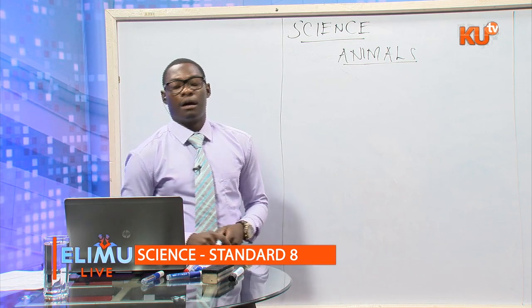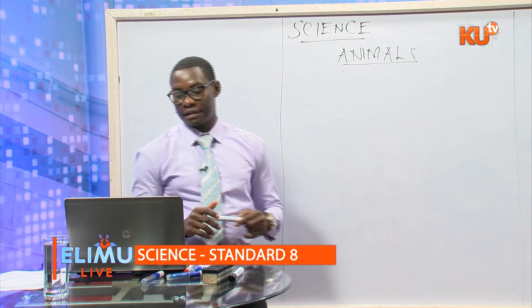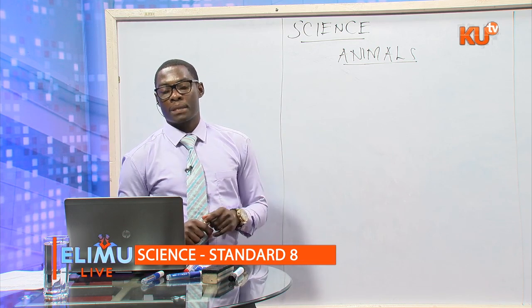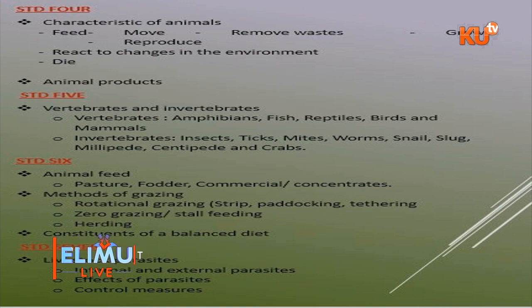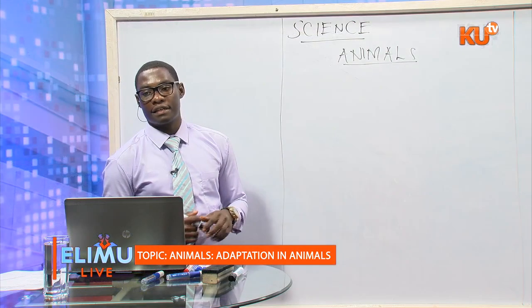In class 4, you learn about the characteristics of animals. All animals feed, move, reproduce, remove wastes, grow, and react to changes in the environment. Not forgetting, all animals also die. We also have animal products — what animals give us.